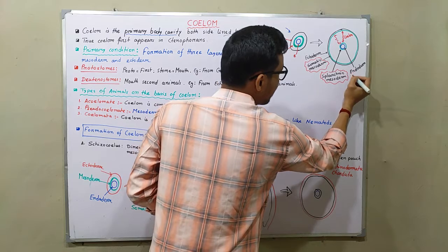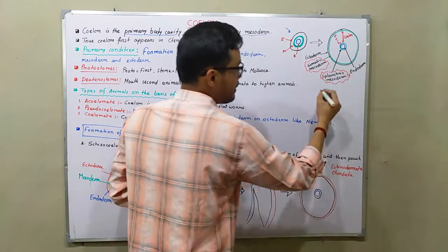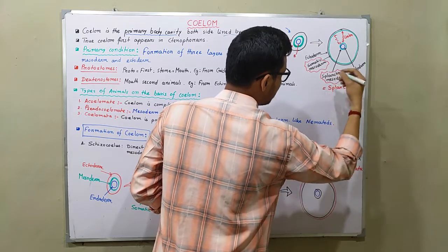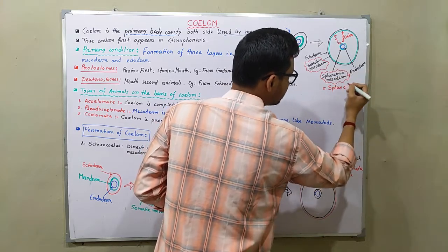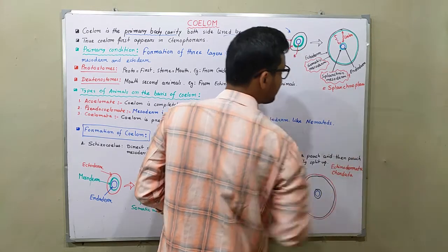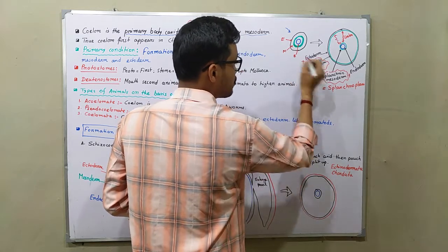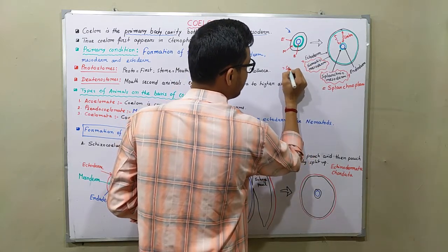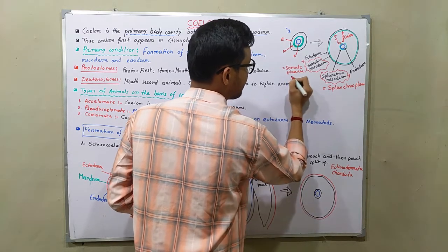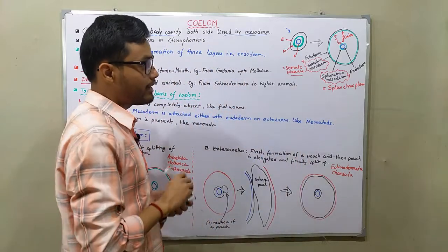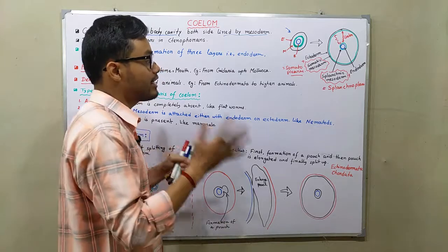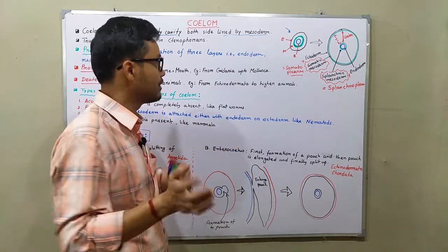Together, the endoderm along with splanchnic mesoderm is known as splanchnopleure, and the ectoderm along with somatic mesoderm is known as somatopleure. So whenever splanchnic mesoderm is attached to the endoderm, it is known as splanchnopleure, and whenever ectoderm is attached to somatic mesoderm, it is known as somatopleure.